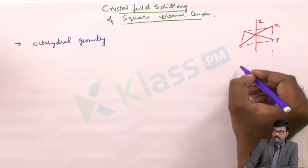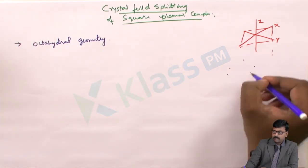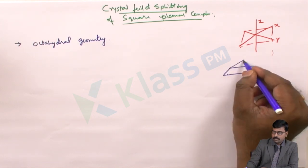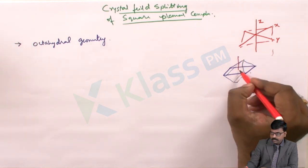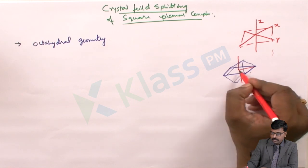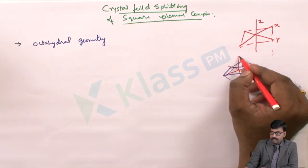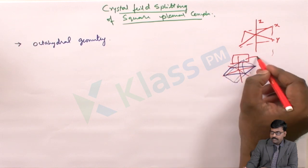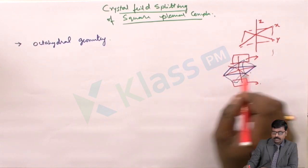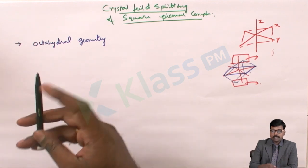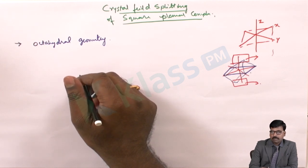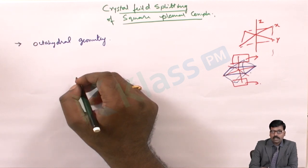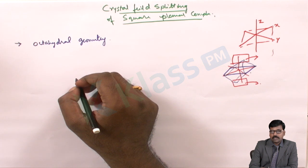In the octahedral, this is the z plane, this is x and this is y plane. The z-axis plane is not filled by any ligands. The octahedral complex is formed when six ligands approach towards the metal atom, but if only four ligands are approaching towards the central metal atom, then the square planar is the result.